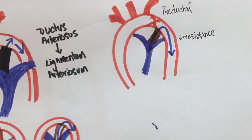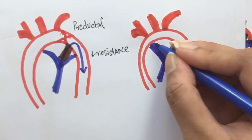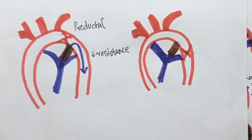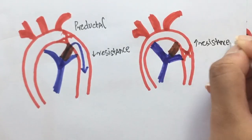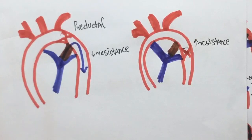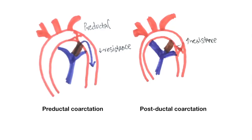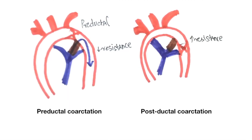In adults, the coarctation is post-ductile. That is, after the ductus arteriosus. So the resistance out here is higher, so the blood will not flow from the pulmonary artery to the aorta. Hence, differential cyanosis will not be found in such cases.